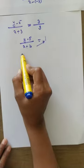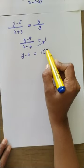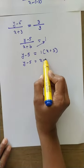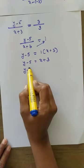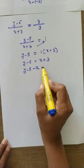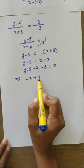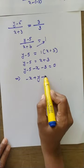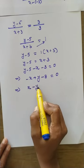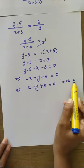Cross multiply: y minus 5 equals 1 into (x plus 3), so y minus 5 equals x plus 3. Taking x to the left side, it becomes minus x; plus 3 becomes minus 3. So: minus x plus y minus 8 equals 0, or equivalently x minus y plus 8 equals 0. This is the equation of the straight line.